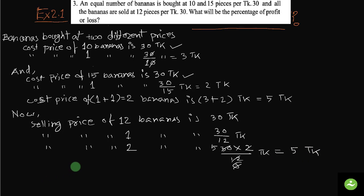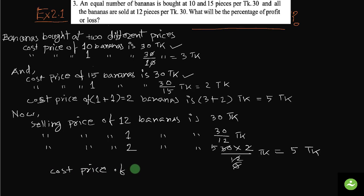So the cost price was 5 taka and the selling price is also 5 taka for 2 bananas. Cost price of 2 bananas equals selling price — cost price equals selling price.